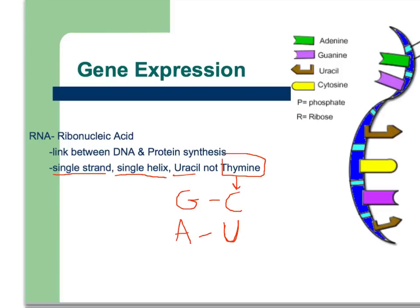Why is RNA so important? It's kind of an intermediary. It changes the DNA message and brings it to the ribosome where proteins are made. DNA is too big to get out of the nucleus, so it changes its message into RNA so it can squeeze through the nuclear pores and go to the ribosome where proteins are made.